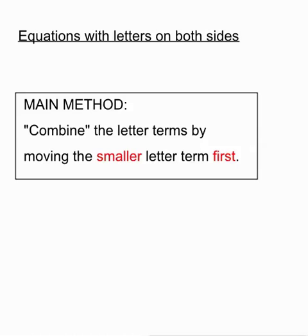Now the main method to solve equations when you have letters on both sides is to combine the letter terms by moving the smaller letter term first. There are other ways to solve these equations, but by sticking to this rule we avoid some negative rules that students often have trouble with. Trust me, this is the best method.